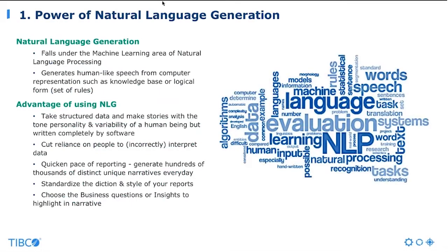So what is natural language generation, and what does it do for us? It falls under the machine learning area of natural language processing. It generates human-like speech from computer representation or a set of rules. We can use natural language generation to take structured data and make stories with the tone and variability of a human being, but completely written by software.